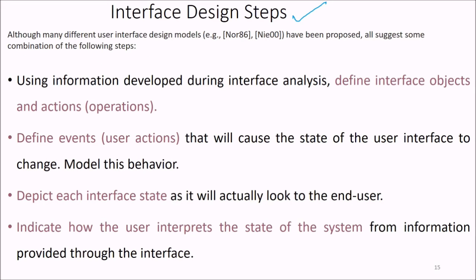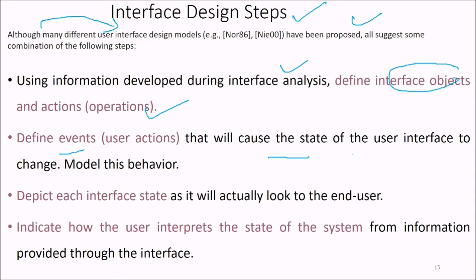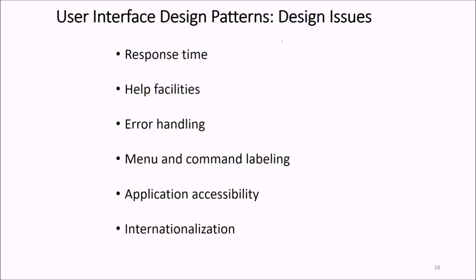Many different user interface design models have been proposed, but the interface design steps they propose are almost the same. Using information developed during interface analysis, we define the interface objects and actions, define events that cause the state of the user interface to change, model this behavior, depict each interface state and how it looks to the end user, and indicate how the user will interpret the state of the system from information provided through the interface.